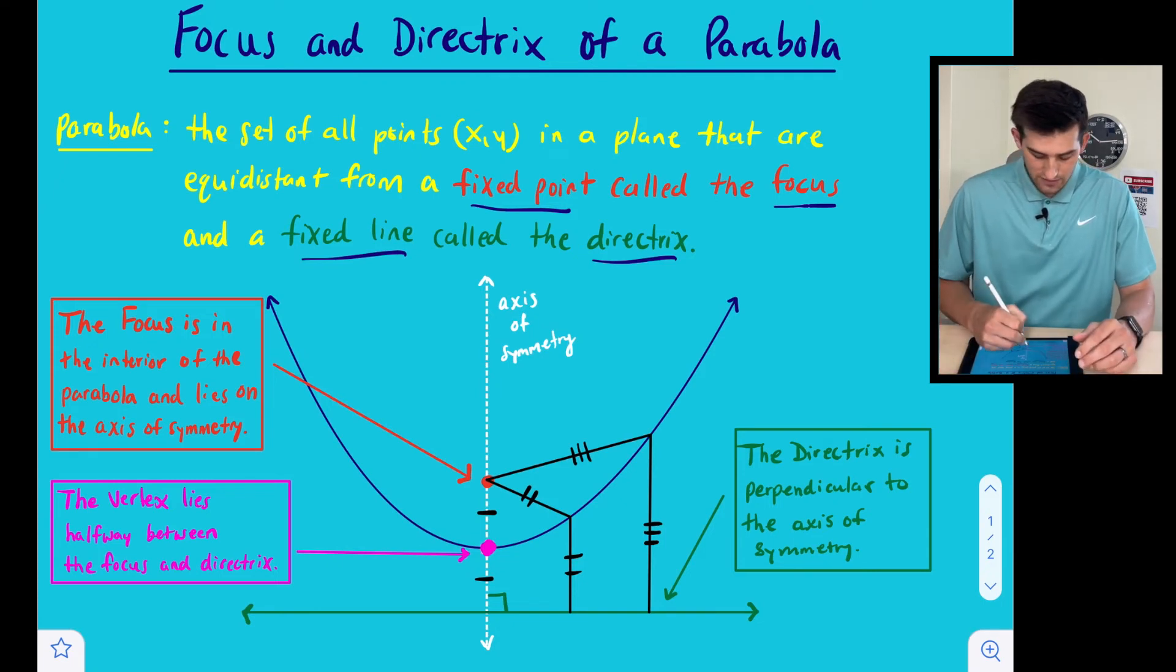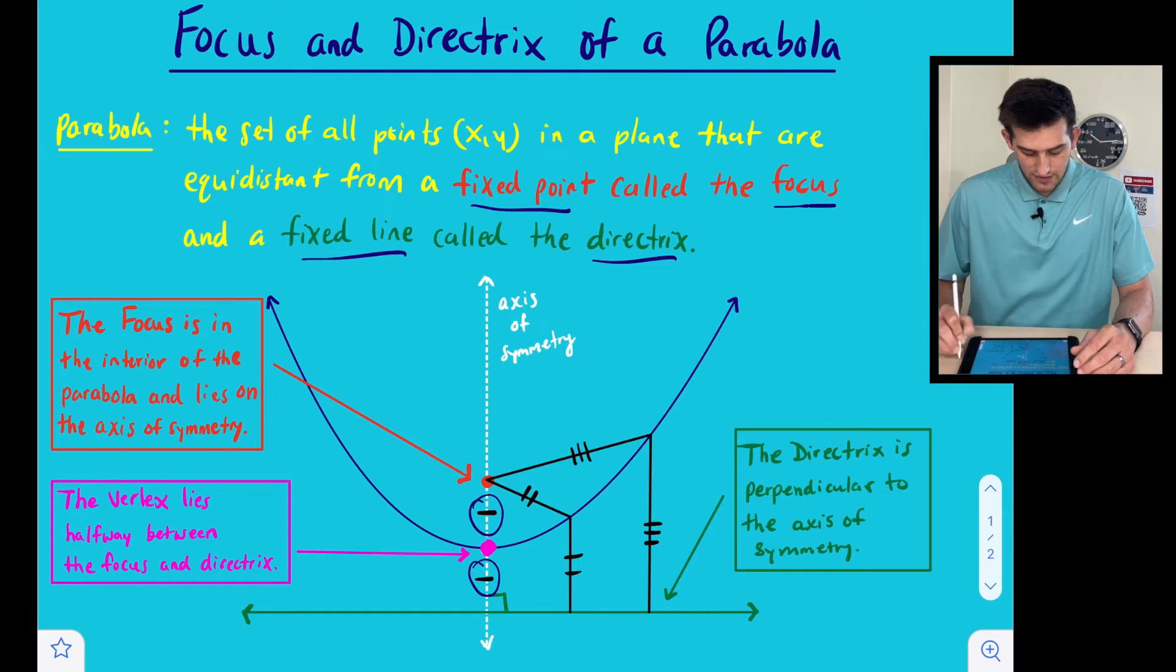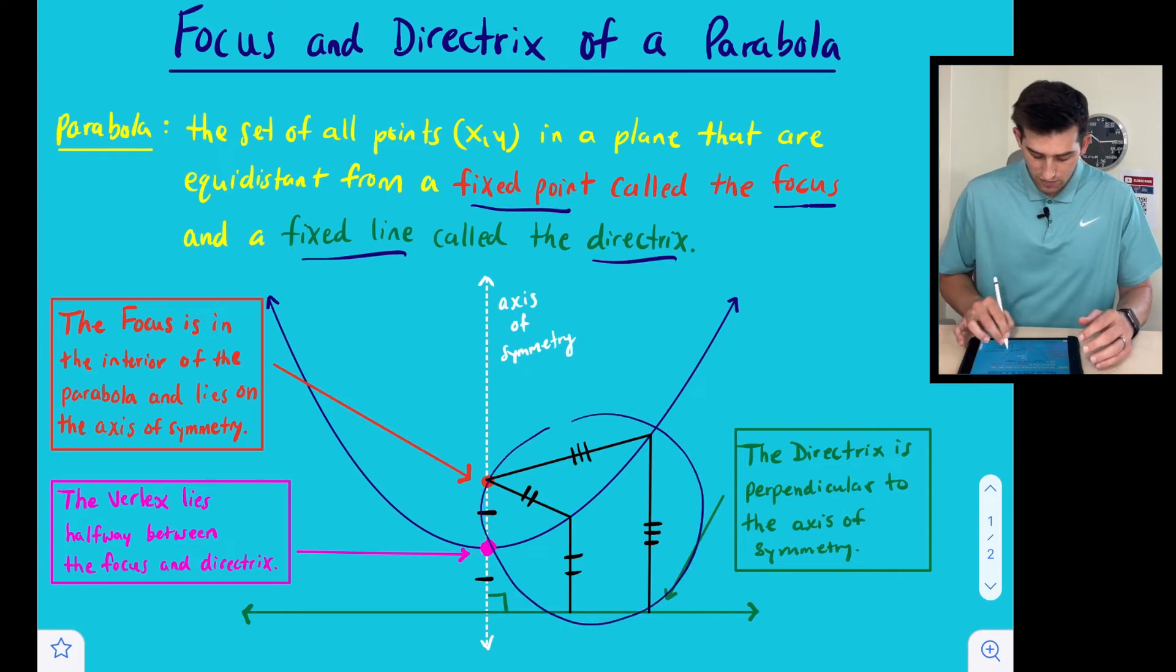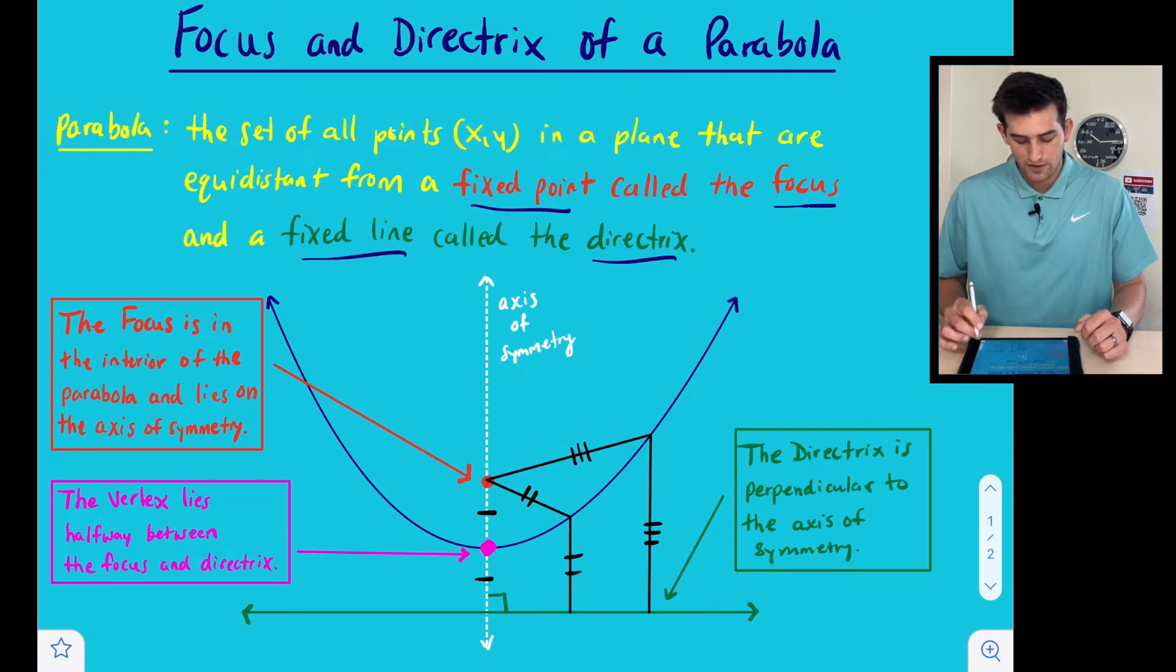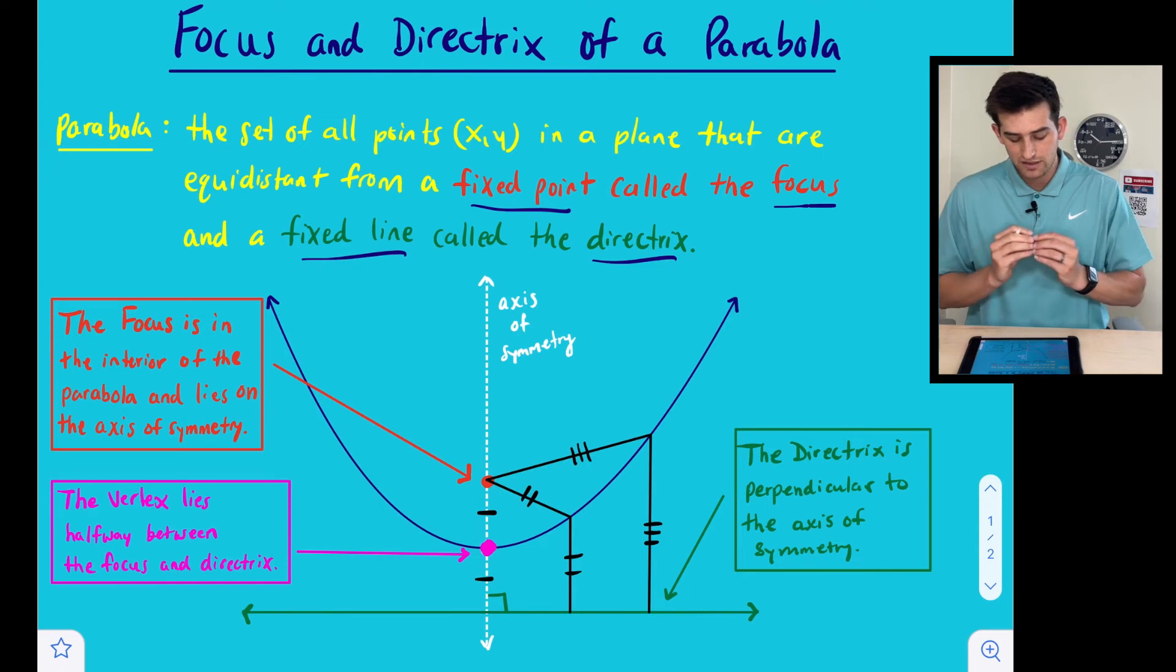Once again, we've already talked about the distance here from the vertex to the focus is the same as the vertex to the directrix. And now we have these other black lines over here, and let's talk about what those are. Our original definition of the parabola said that it's the set of all points, so our parabola needs to be equidistant from the focus and the directrix, the two things together.